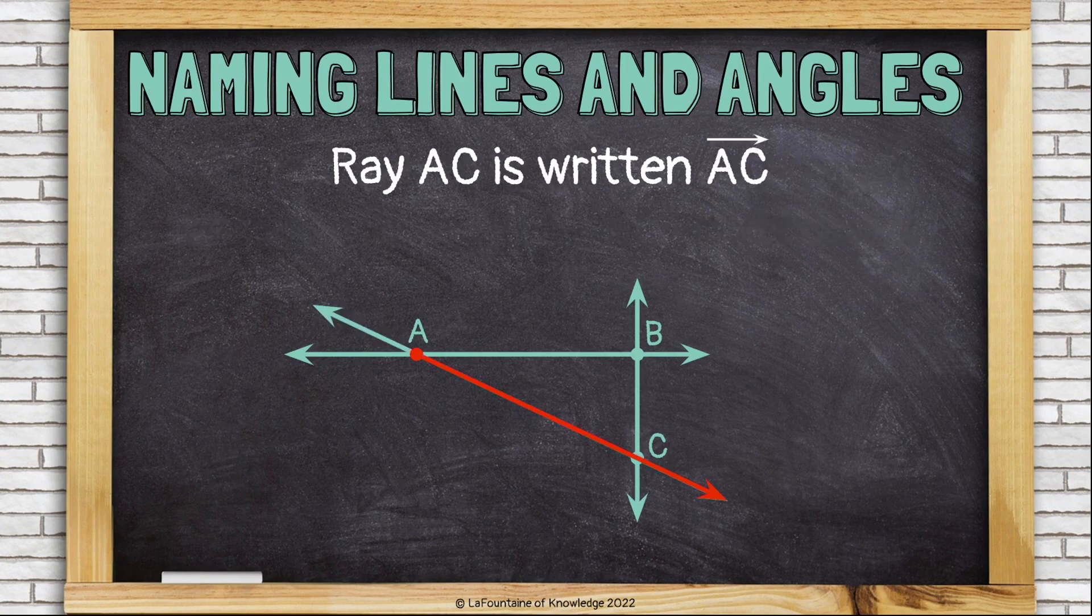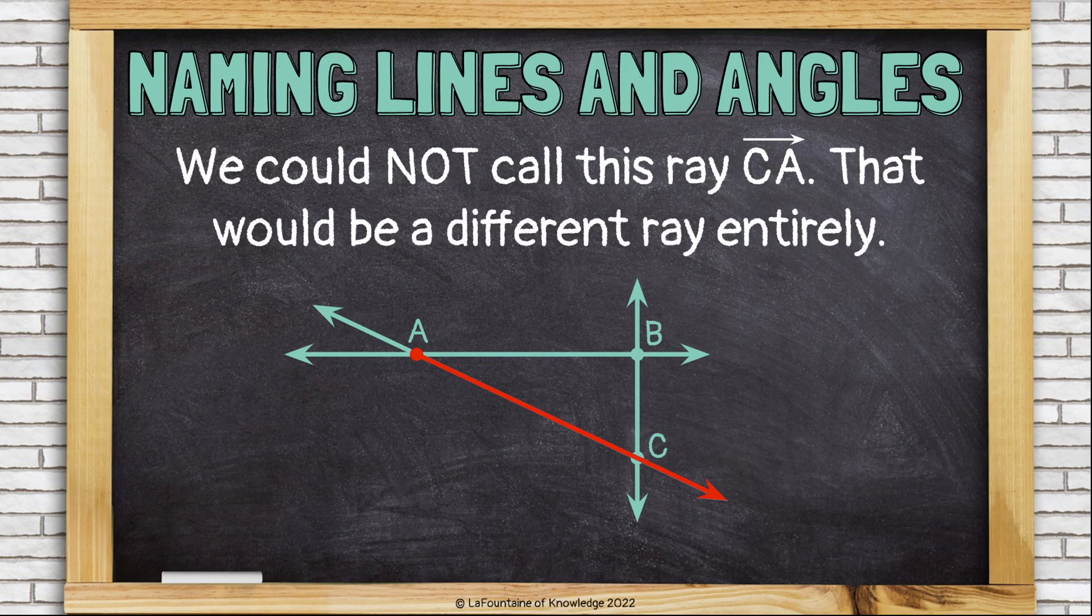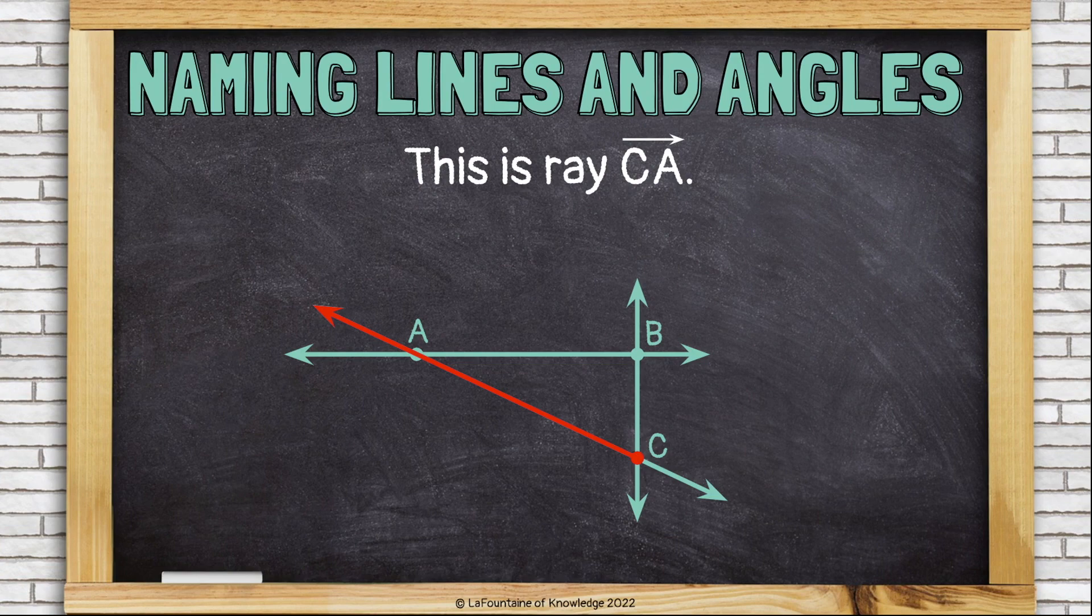Ray AC is written like this: AC with a ray symbol over it. Notice how the ray symbol only has an arrow on one side. We could not call this ray CA. That would be a different ray entirely. That would be this ray.